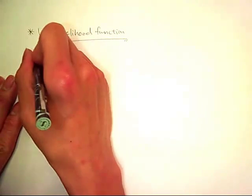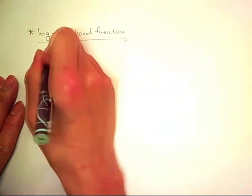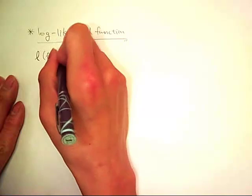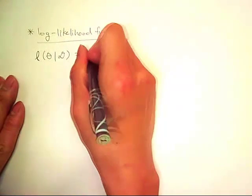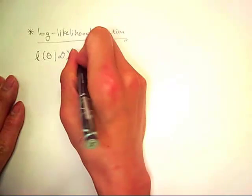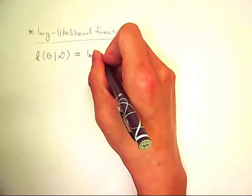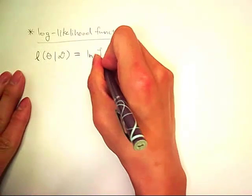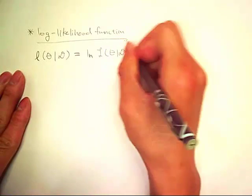We are going to denote this log likelihood function with a lowercase l of theta given data set D. We can rewrite this as the natural log of the likelihood function l of theta given data set D.